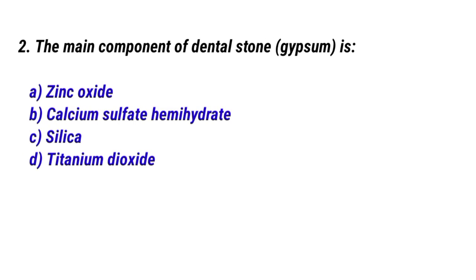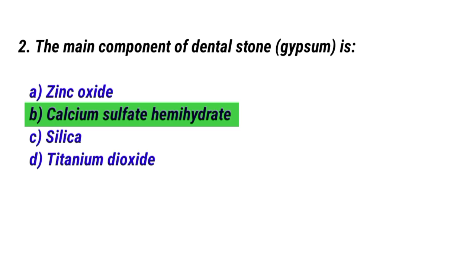Question No. 2: The main component of dental stone is? The right answer is Option B: Calcium sulfate hemihydrate.